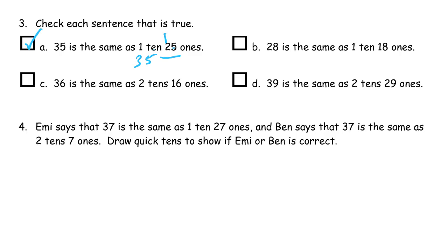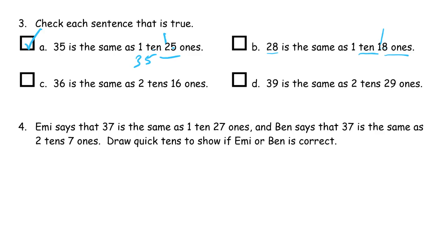And we'll look at B next. 28 is the same as one 10 and 18 1s. So if we take the 18 1s and add a 10 to it, then we have one more 10. So that's two 10s and we'll still have the eight 1s for 28. 28 and 28, that's the same. We'll look at C next. 36 is the same as two 10s, 16 1s. So 16 1s - if I had two more 10s, I'll have one plus two, I'll have three 10s. But I'll still have the six 1s, so 36.